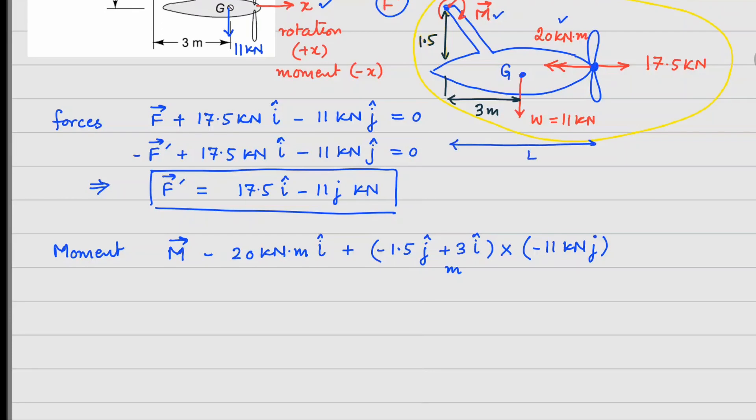Similarly, if I assume that thrust is acting right at the propeller and we do not know this distance, so let us assume that this is given L and you will see that this will disappear because of the cross product. So again for this part, minus 1.5 j cap plus L i cap crossed with the thrust value which is 17.5 i cap. This whole thing equals to 0.